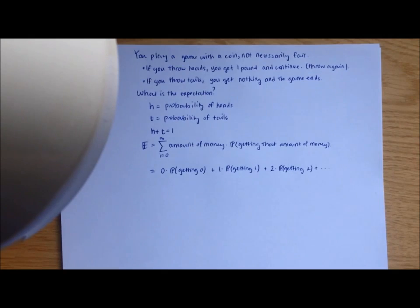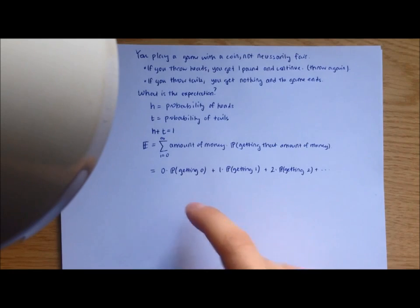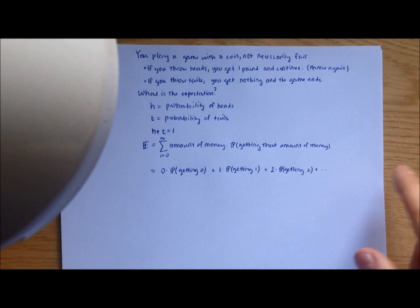If you're a bit confused by the summation notation with the sigma, I've also written it out like this. It's just zero times the probability of me getting zero, one times the probability of me getting one, plus two times the probability of me getting two, and you continue this on, so it's an infinite sum to infinity.